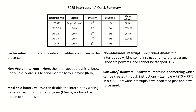Taking 8085 as an example, the interrupts available are: TRAP, RST 7.5, RST 6.5, RST 5.5, and INTR. TRAP is the highest priority and is non-maskable — it has a fixed vector address where its interrupt code resides. RST 7.5, 6.5, and 5.5 are second, third, and fourth priority respectively — all maskable. INTR is fifth priority, maskable, but has no predefined vector address.